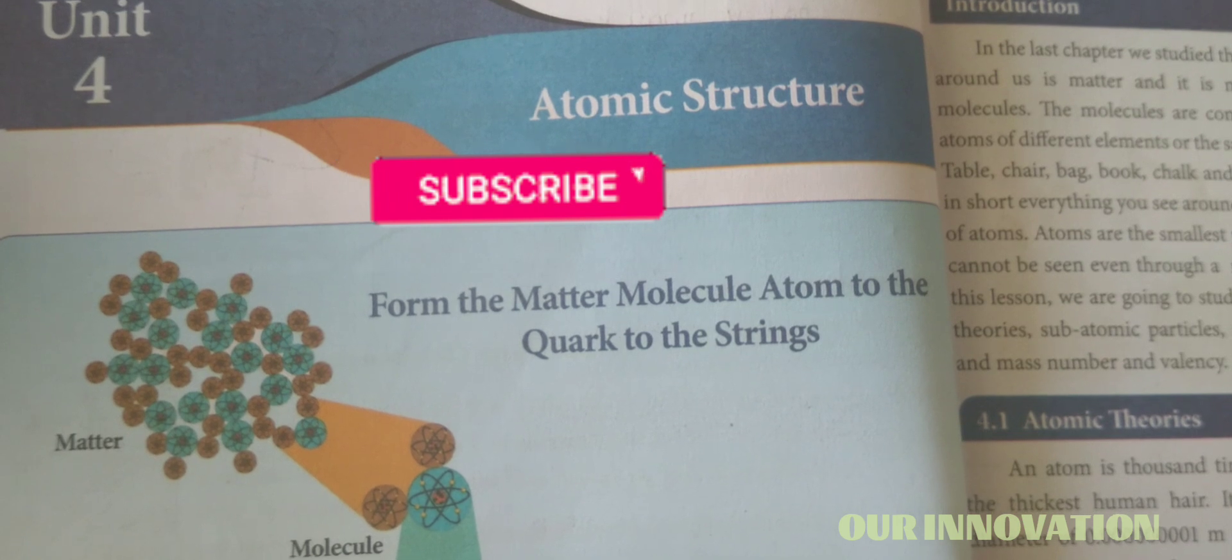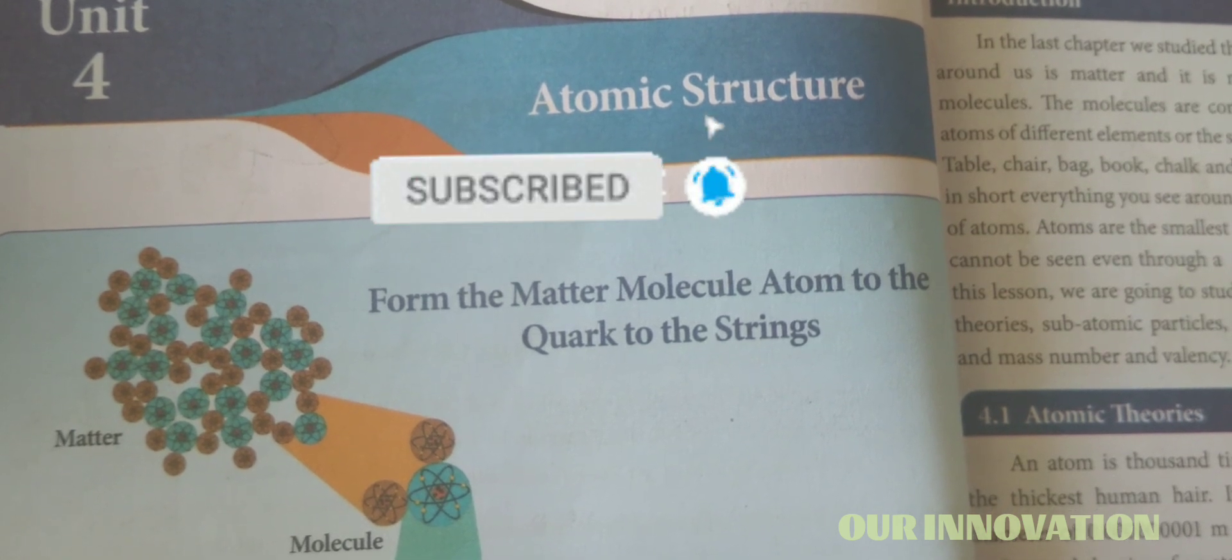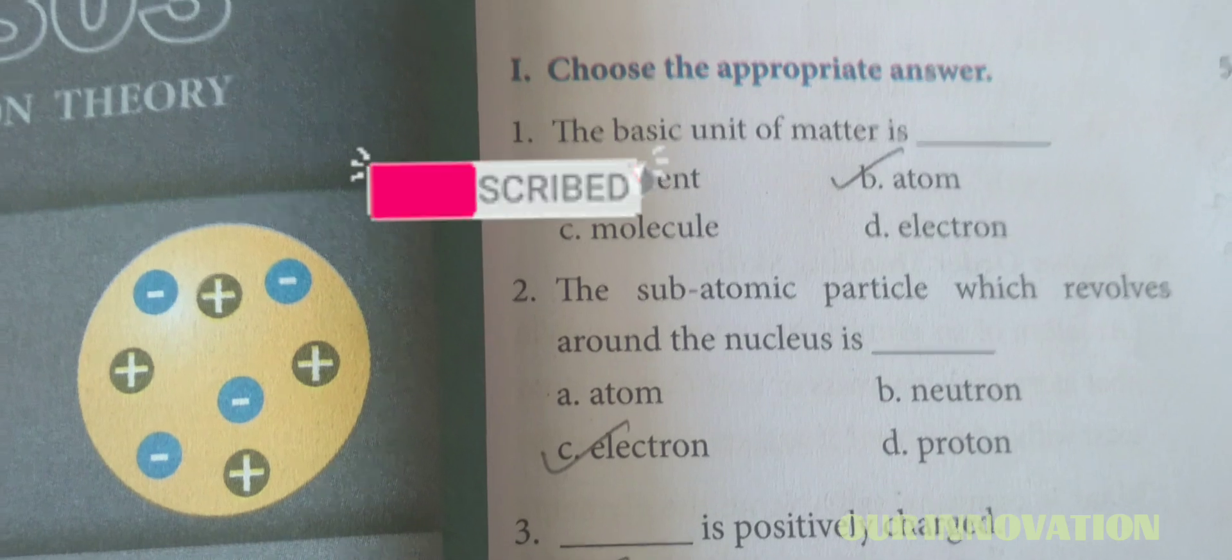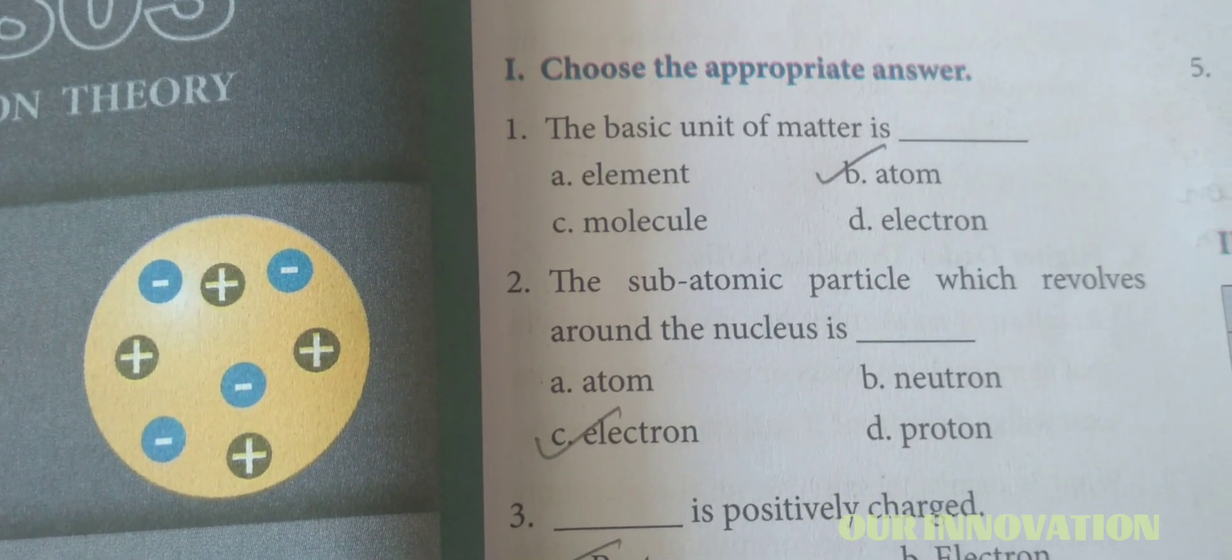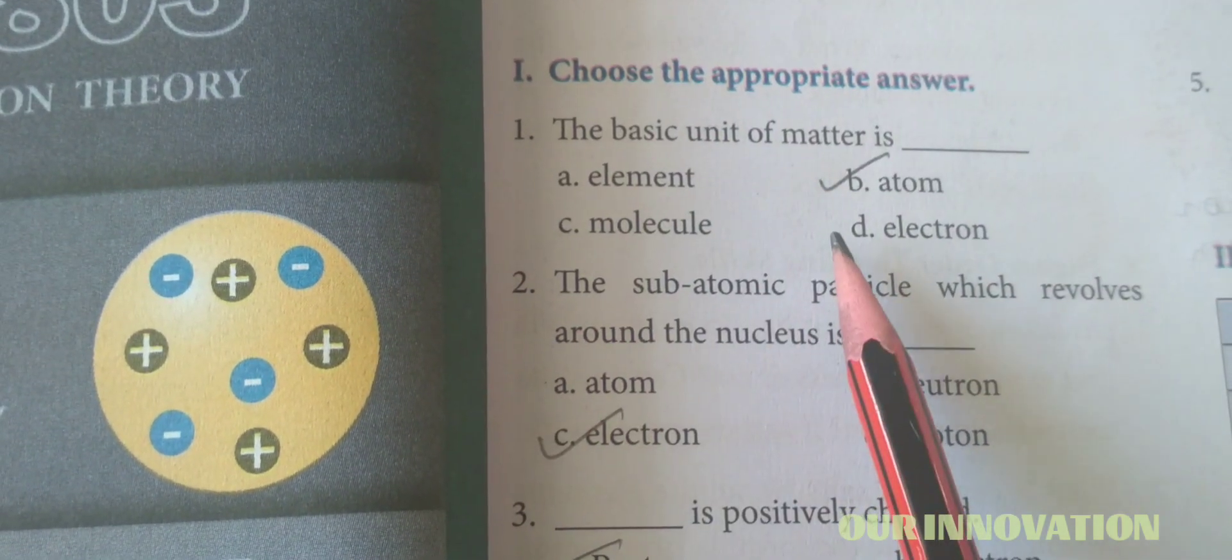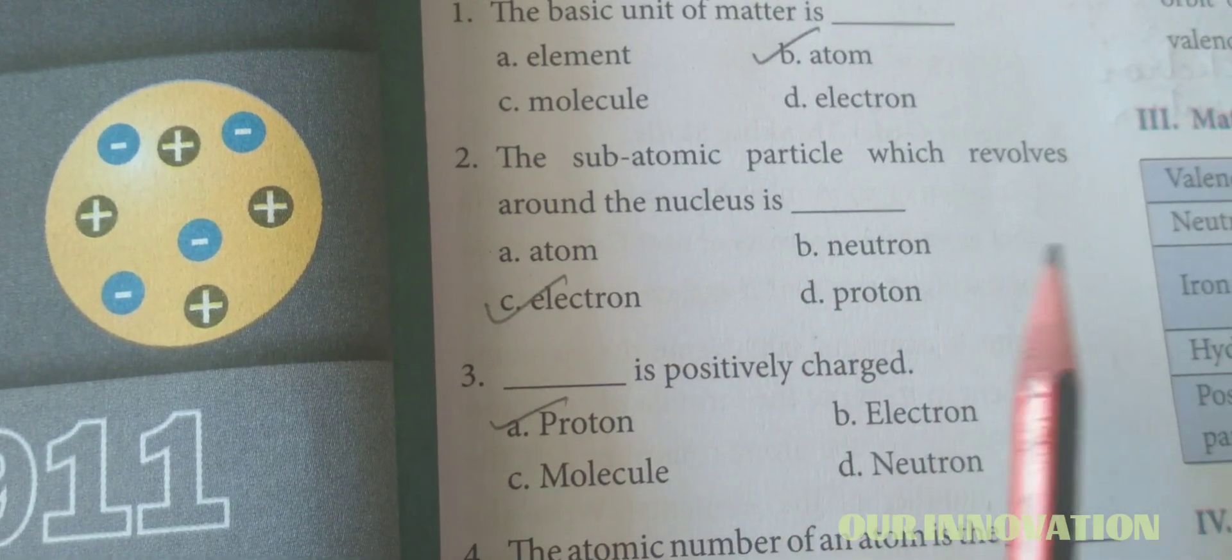Choose the appropriate answer. The basic unit of matter is atom. The subatomic particle which revolves around the nucleus is electron.